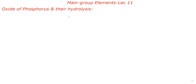Hello everyone, welcome to Vijay Chemistry. Today we are going to discuss Main Group 11, Lecture 11. In Lecture 11, we are going to discuss the oxide of phosphorus and hydrolysis. Students, this is a very important topic. Please note this topic from our JAM exam point of view. Questions have already appeared based on this concept.